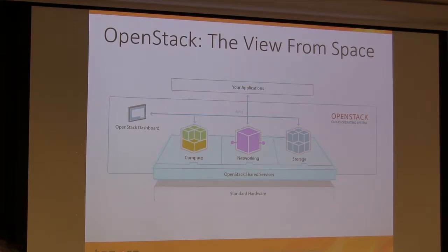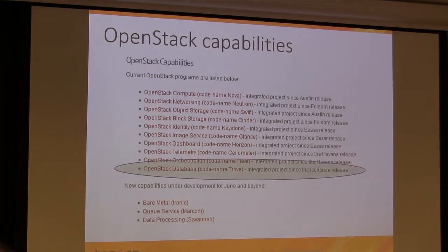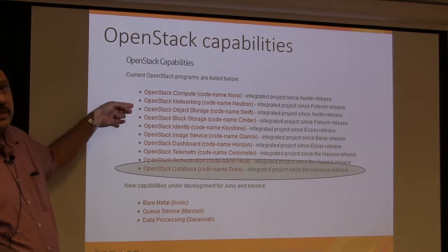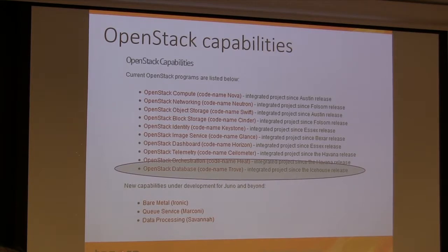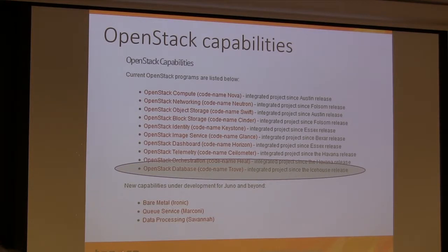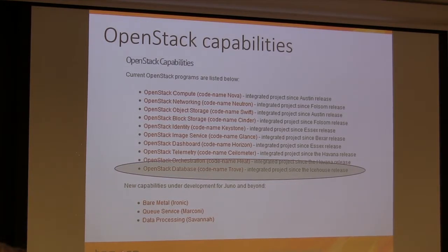OpenStack gives you the ability to build a private cloud in your own data center. If you're familiar with Amazon, Nova is the EC2 equivalent. Neutron is the networking service — nothing equivalent to it in Amazon. There are two storage modules: Swift is the object store and Cinder is the block store. Keystone is the identity service. Glance is where you put the equivalent of an image, like your AMIs. Horizon is your dashboard. Ceilometer is the telemetry service. Heat is orchestration, and Trove — just added to Icehouse — is the database as a service project.